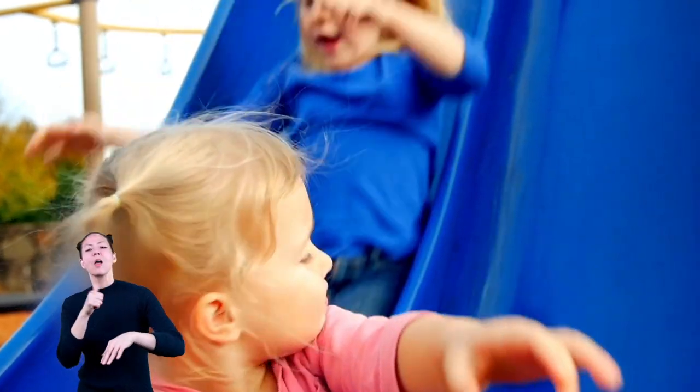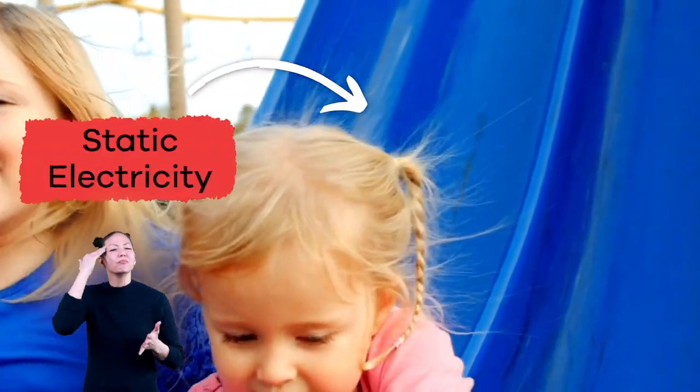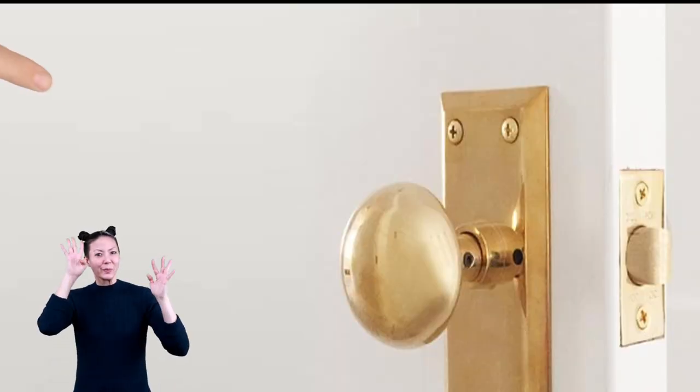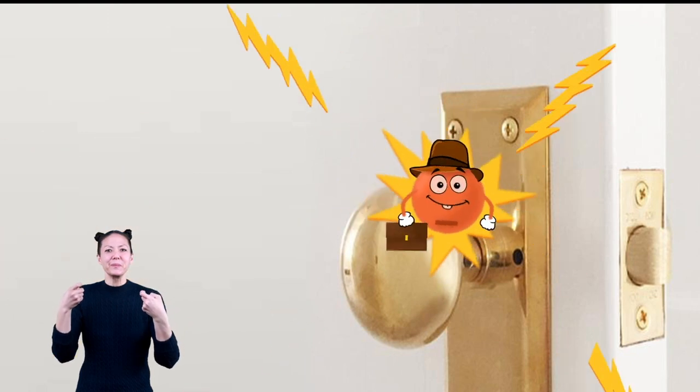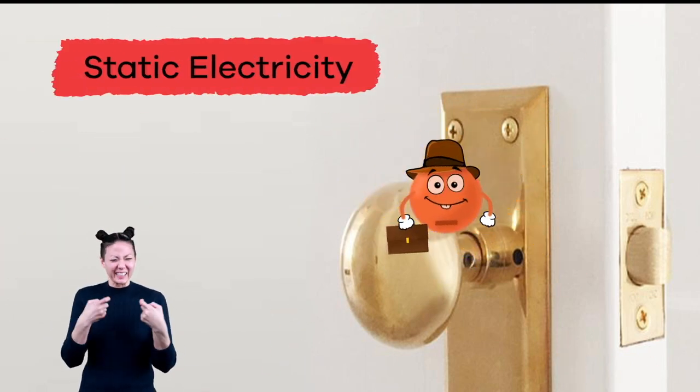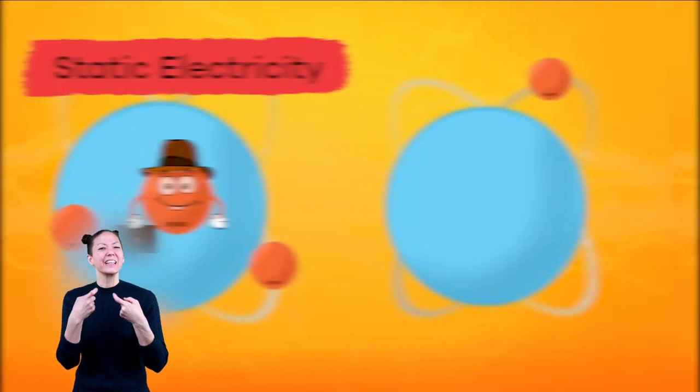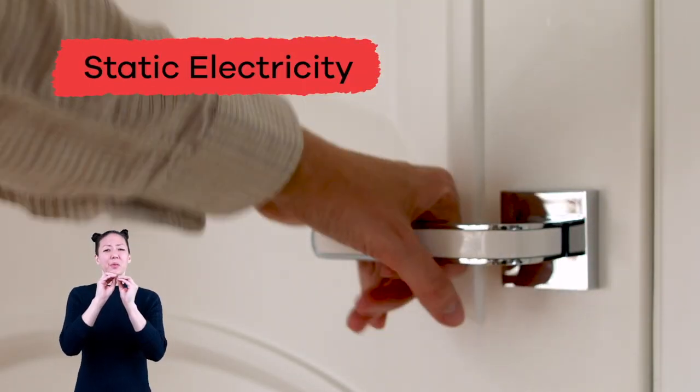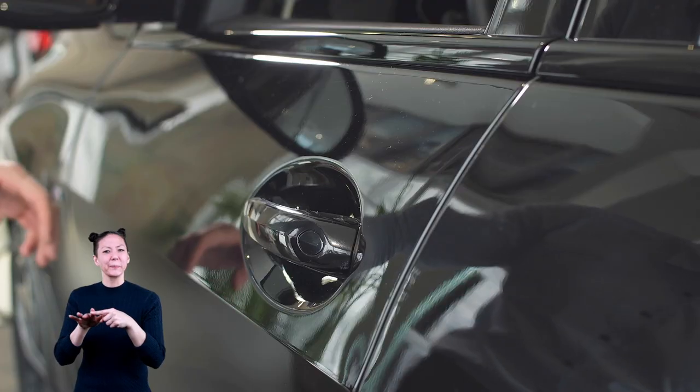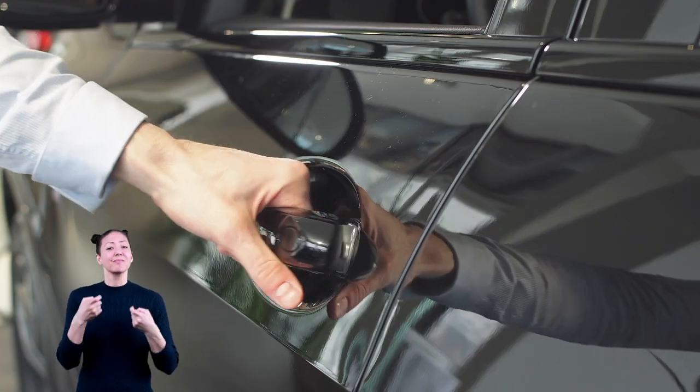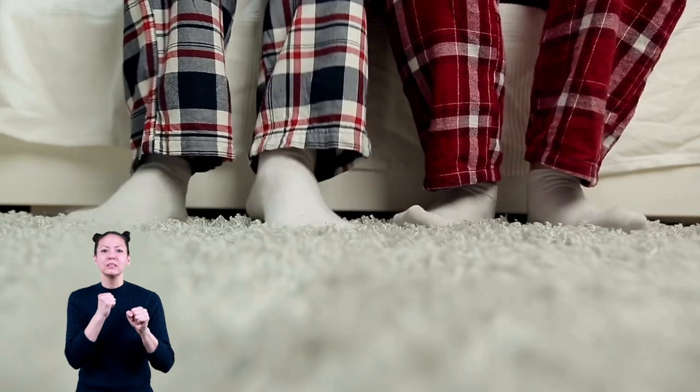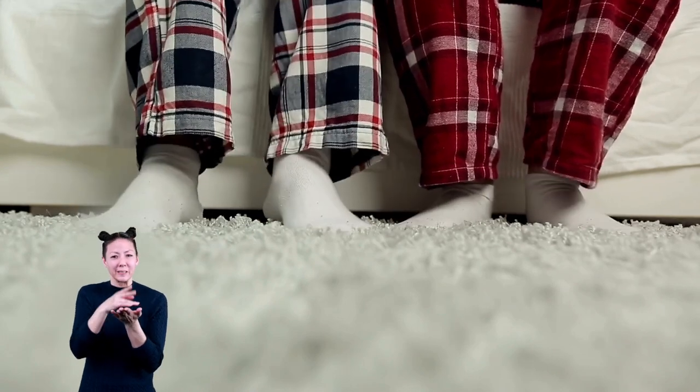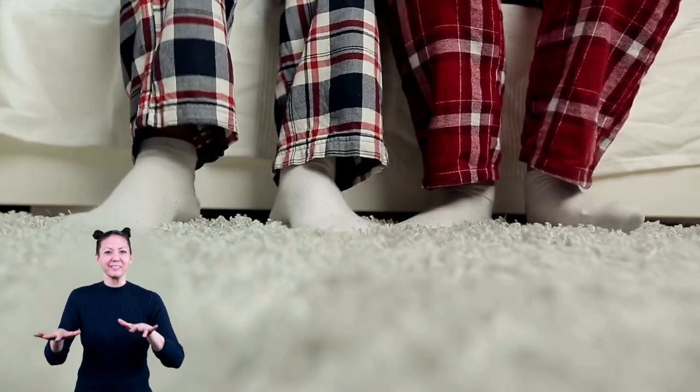Another type of electricity you are probably familiar with is called static electricity. Have you ever been shocked when you touched a doorknob after walking in socks across the carpet? That's static electricity. It happens when electrons move from one place to another, like from your hand to the doorknob. Electrons can move more easily in some objects than in others. And when certain materials rub against each other, like your socks and the carpet, they transfer electrons.